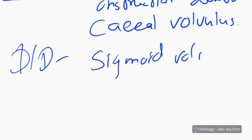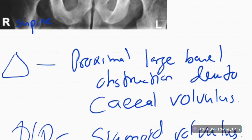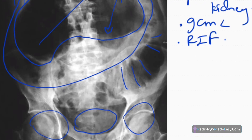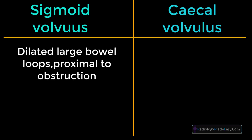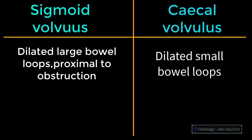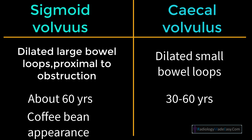The diagnosis is proximal large bowel obstruction due to cecal volvulus. The differential diagnosis is sigmoid volvulus. In sigmoid volvulus, you see a coffee bean appearance — a large mass on the left side of the abdomen extending upwards. In cecal volvulus, you sometimes have a point of constriction, and there are mainly dilated small bowel loops rather than large bowel loops proximal to the obstruction. Sigmoid volvulus occurs above 60 years of age, while cecal volvulus occurs between 30 to 60 years.